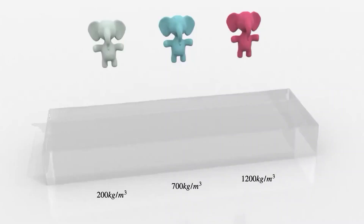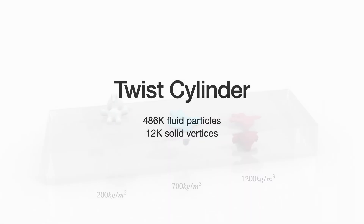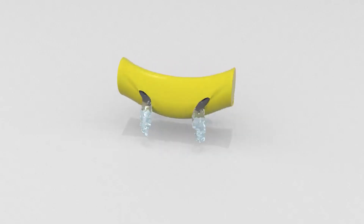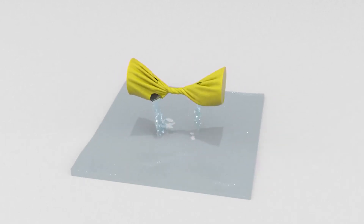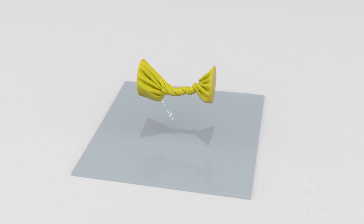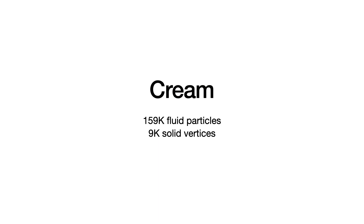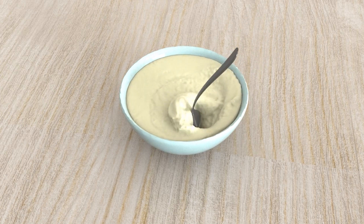Then we evaluate our method in more complex scenarios. We drop three elastic elephants with different densities into the water, and our method correctly captures the floating behavior. Our method is also able to couple fluids with codimensional materials with penetration-free guarantee. As we slowly twist the cylindrical cloth, the inside water gradually gets squeezed out through the holes. Here we use an elastic spoon to stir viscous cream in a bowl, and the spoon gets deformed due to the contact with the cream.